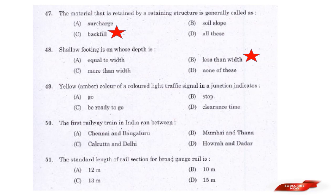Question: Yellow/amber color of a colored light traffic signal at a junction indicates — options: Go, Stop, Be ready to go, Clear and style. Answer: Option D — Clear and style.